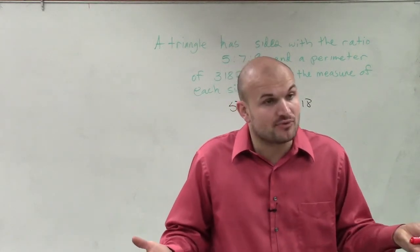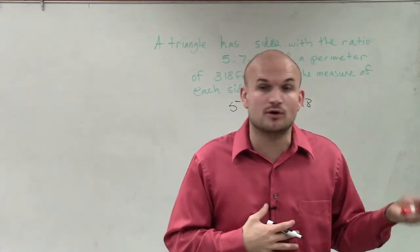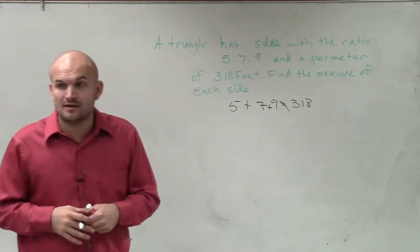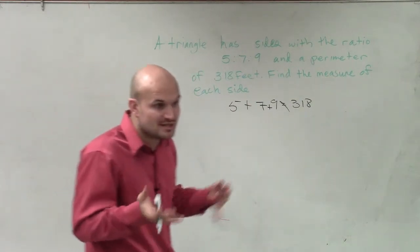You add up all the sides to get the perimeter, right? What I'm doing is a common mistake that students make, saying if the ratio is 5, 7, and 9, well, then those have to be the side lengths. But those are not the same. Those are the reduced side lengths.